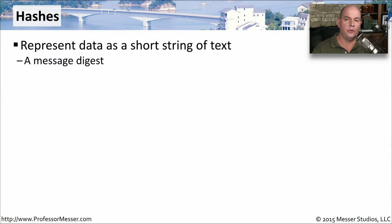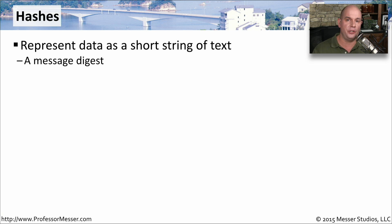Hashing is a way to take a group of data of any size and represent it as something called a message digest — just a small string of text. We can take an entire book, create a hash from that book, and present you with one single line of text that represents the information in that book. This is not an encryption of that data; it's simply a way to represent all of that data as a string of text, and we call that a message digest.